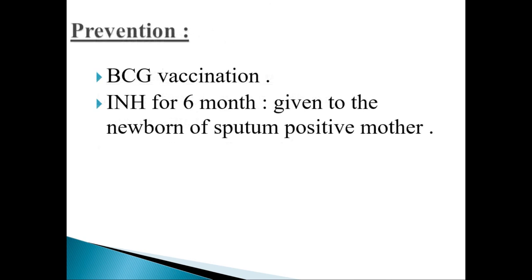Prevention of tuberculosis is by BCG vaccination, which is given at birth in Sudan because Sudan is one of the endemic countries for tuberculosis. Another way of prevention is the use of INH for six months, given to the newborn of a sputum-positive mother, to prevent tuberculosis in the newborn.